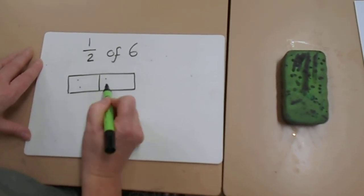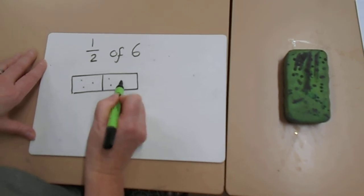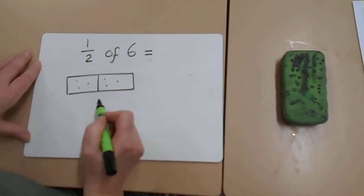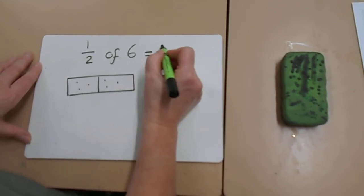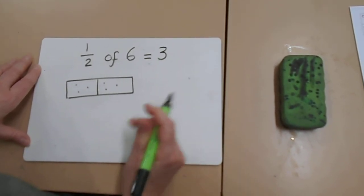1, 2, 3, 4, 5, 6. So we need to look at how many dots we've got on each side. There are 3 dots on each side, so half of 6 is 3.